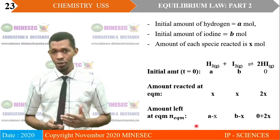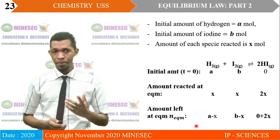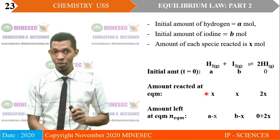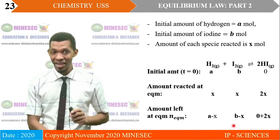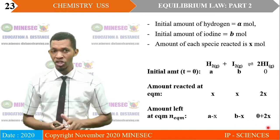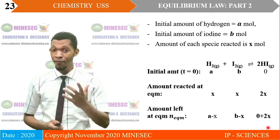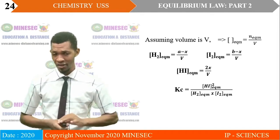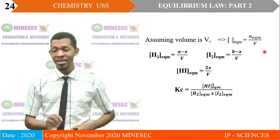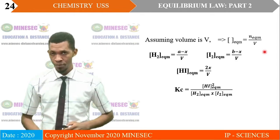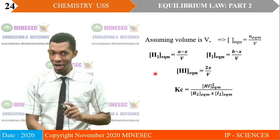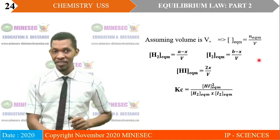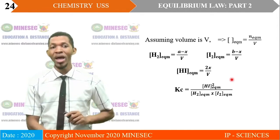The amount remaining at equilibrium for hydrogen is (A − X) moles; for iodine, (B − X) moles — the reactants are used up so the amount is reduced. The amount of product hydrogen iodide remaining at equilibrium is (0 + 2X) moles, since products are formed. Assuming the volume of the equilibrium system is V, molar concentrations at equilibrium are: [H₂] = (A − X)/V, [I₂] = (B − X)/V, and [HI] = 2X/V.